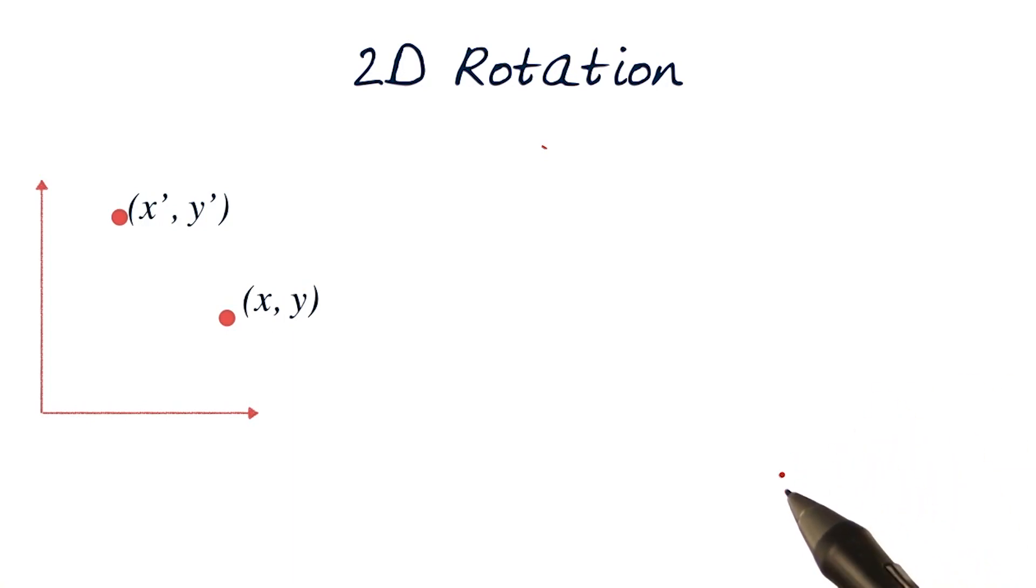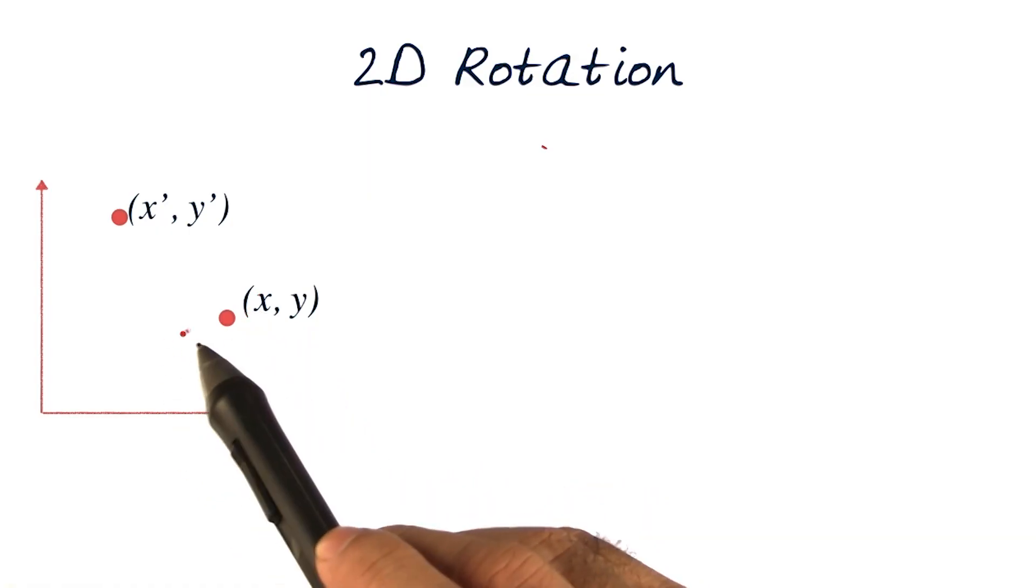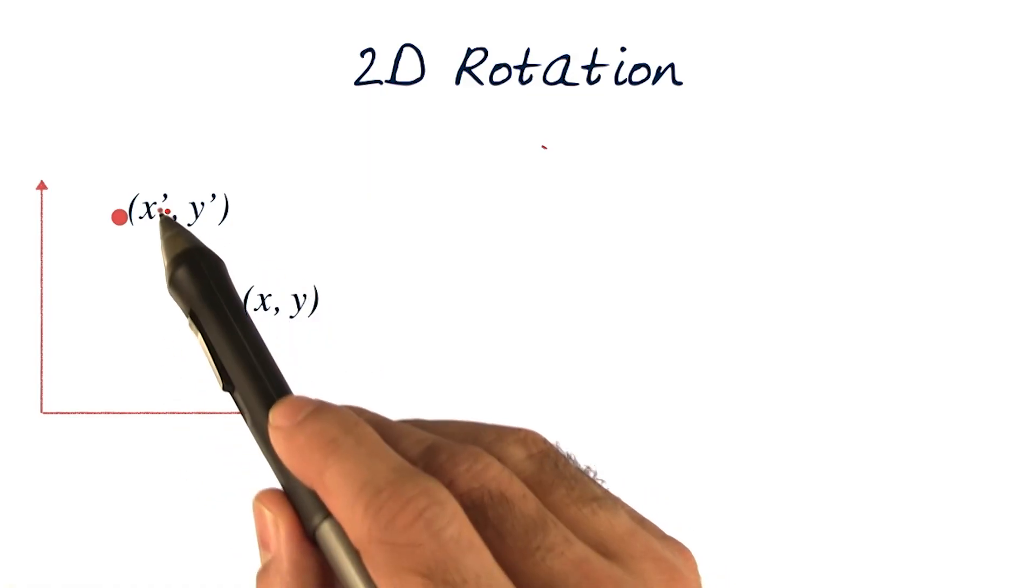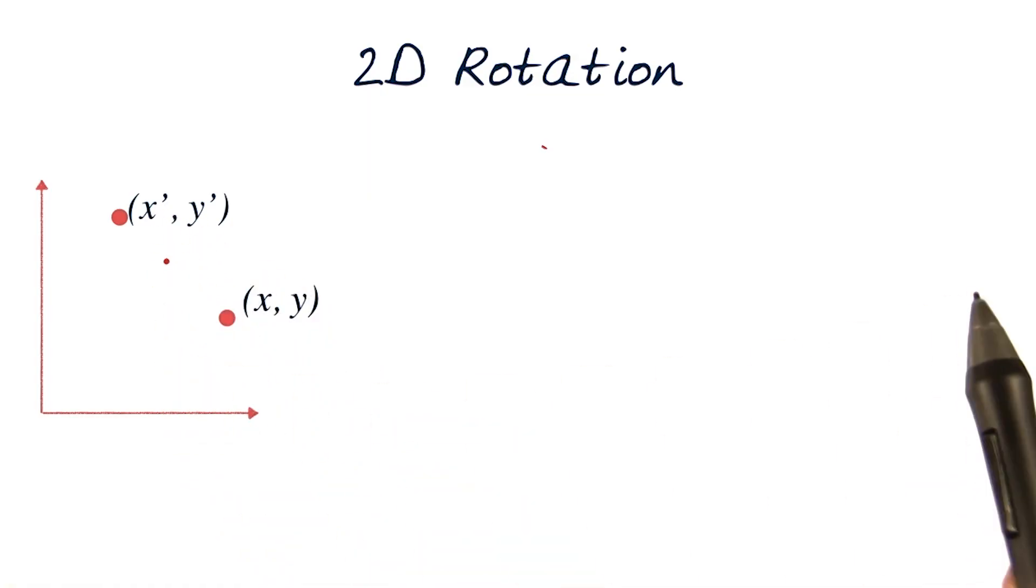What about rotation? Here, I'm showing a simple example. I have two points: x, y, the original points here, and x prime, y prime, where I want the transformation to happen.